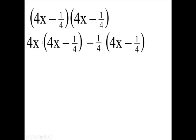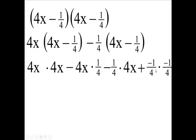So now I have 4x times 4x. Copy that negative down here and put the 4x times one-fourth. Copy the negative down here and put one-fourth times 4x, and then put plus and copy this fraction twice.